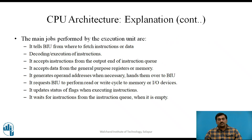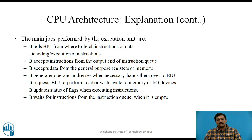The Execution Unit tells the BIU from where to fetch instructions or data. It decodes and executes instructions, accepts instructions from the output end of the instruction queue, and accepts data from general purpose registers or memory. It generates operand addresses when necessary and hands them over to the BIU. It requests the BIU to perform read or write cycles to memory or IO devices, updates status flags when executing instructions, and waits for instructions from the queue when it is empty.